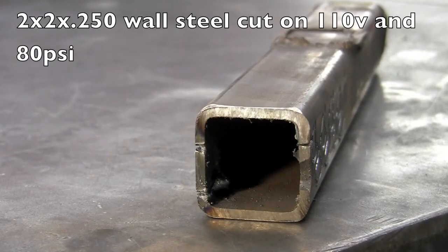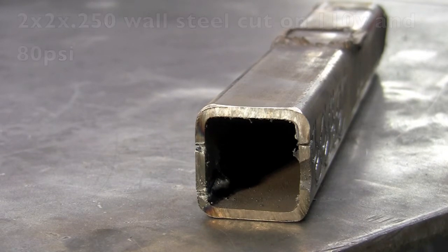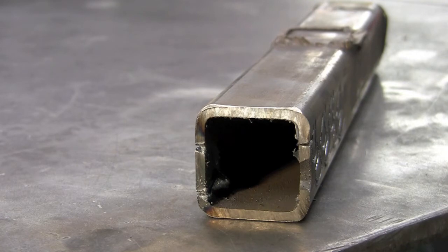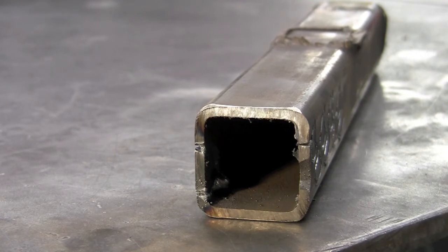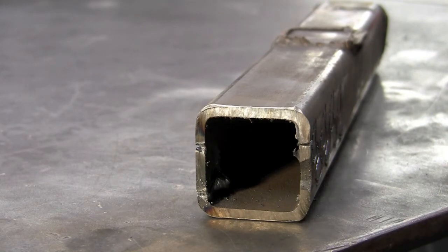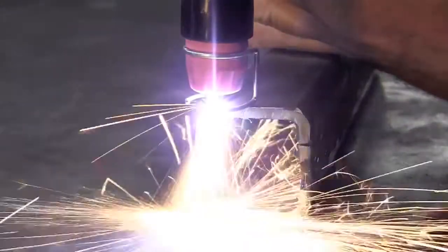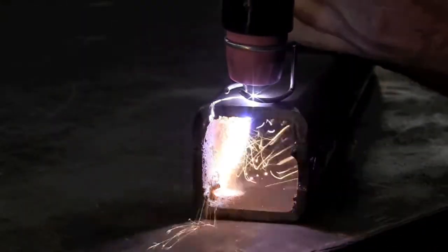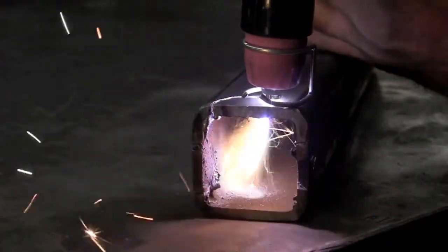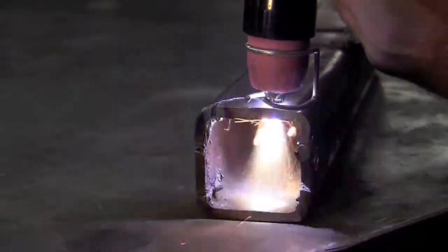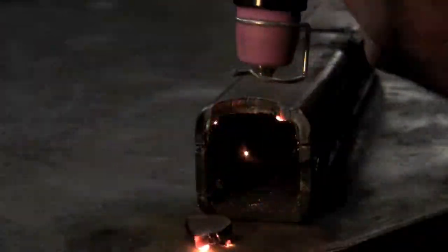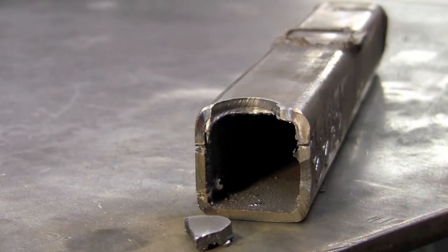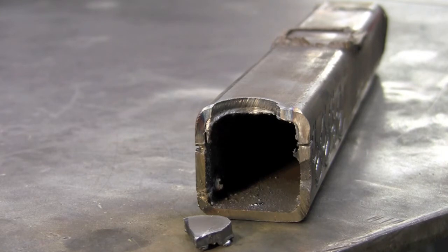For this first test piece, I'm dialed in with 25 amps. I'm plugged into the wall on 110. And we're going to cut some 2x2x250 wall steel. As you can see, the travel speed had to be slowed down. But that's still plugged into the wall and 250 wall on 110. That's pretty amazing.